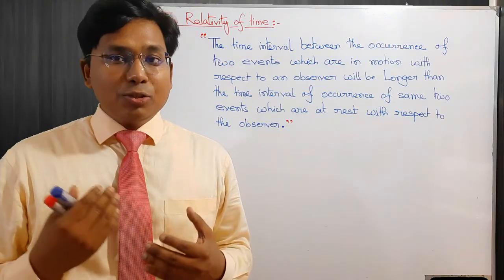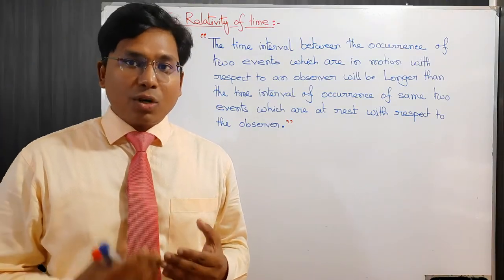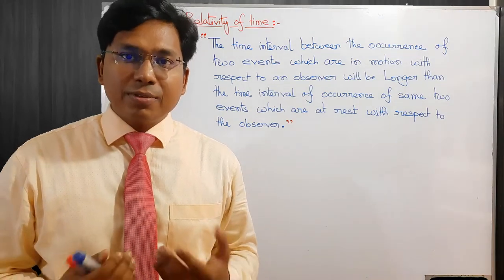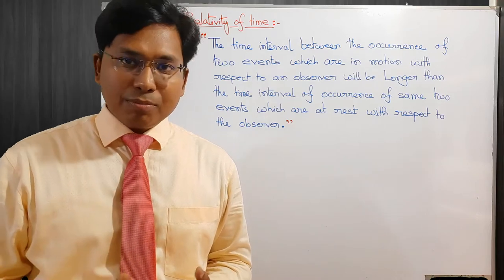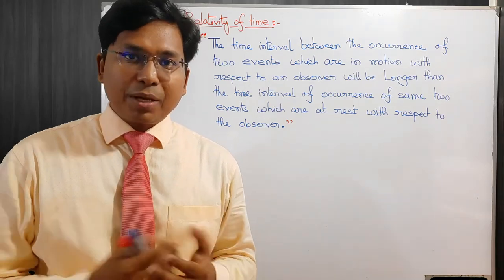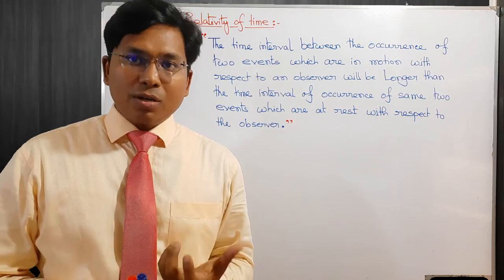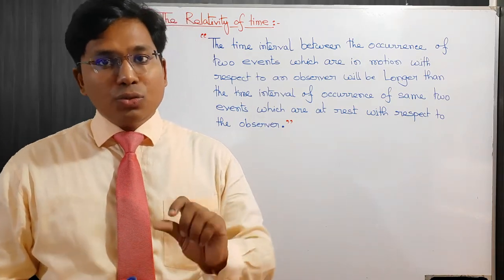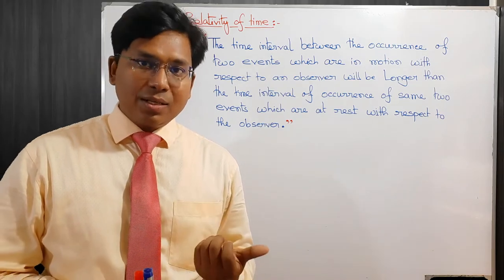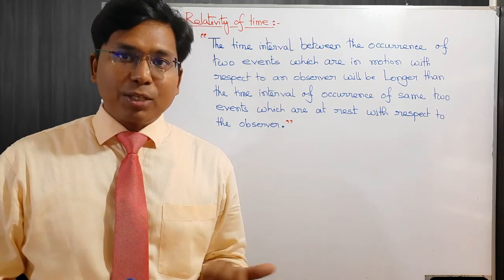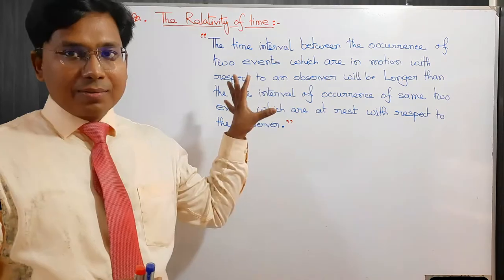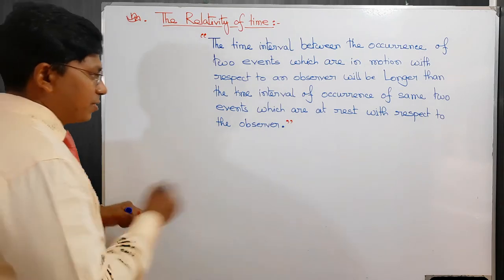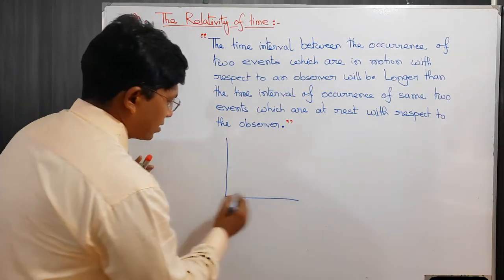Students need to know about what is called relativity of time. The time interval between the occurrence of two events which are in motion with respect to an observer will be longer than the time interval of the occurrence of the same two events which are at rest with respect to the observer. Now we need to explain this phenomenon.